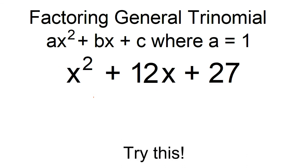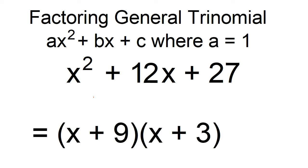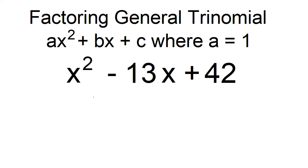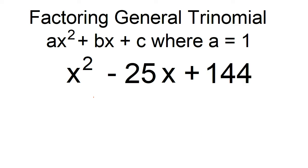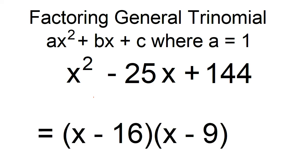Try this. Factor x squared plus 12x plus 27. The factors are x plus 9 and x plus 3. Factor x squared minus 13x plus 42. The factors are x minus 7 and x minus 6. Factor x squared minus 25x plus 144. The factors are x minus 16 and x minus 9.